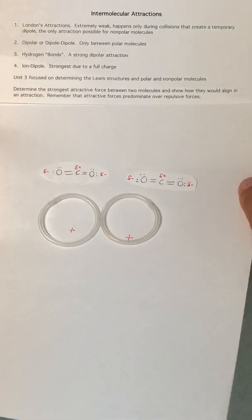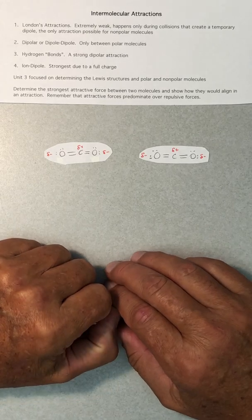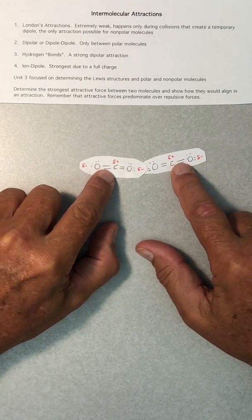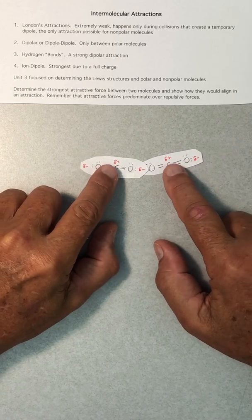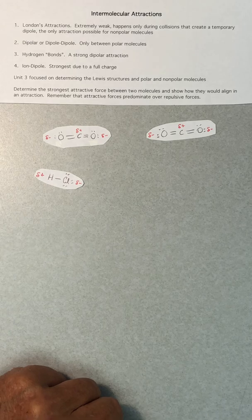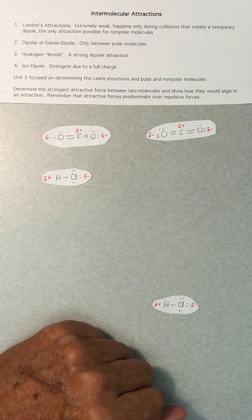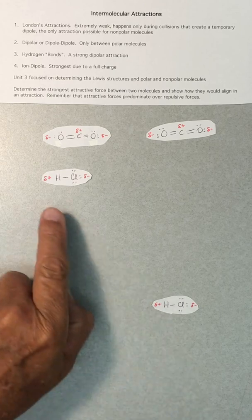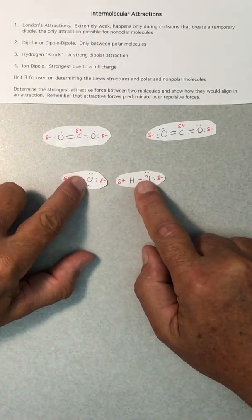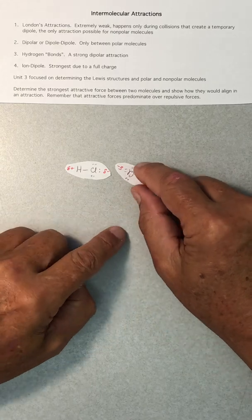Let's look at different types of intermolecular attractions. Here are two nonpolar molecules — right now there's no dipole. But when they collide, they deform each other's electron clouds creating a temporary dipole. Now, what if a molecule has a permanent dipole? For example, hydrogen chloride has a difference in electronegativity making it a polar covalent bond, so there is a permanent dipole indicated by partial charges. When two of these particles come close together, attraction or repulsion is possible.